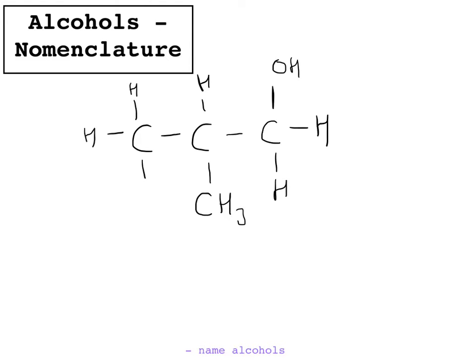As we learnt in Chem 1, the first thing we've got to do is look for the longest carbon chain. You can see that that is three carbons long — one, two, three. So the name of this compound is going to be based on prop.